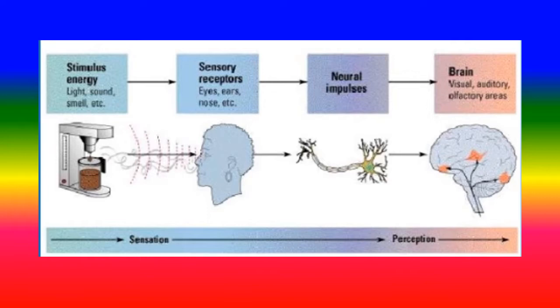Sensory receptors, including eyes, ears, and nose, receive the stimulus. Neural impulses are transmitted by neurons to the brain. Different parts of the brain contribute to receiving this stimulus, including visual, auditory, and olfactory areas, etc.